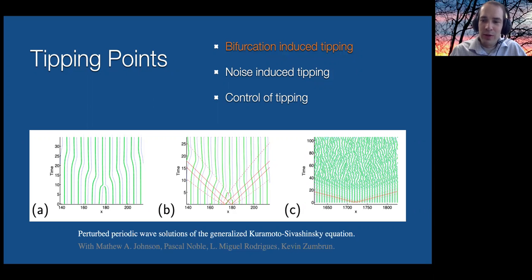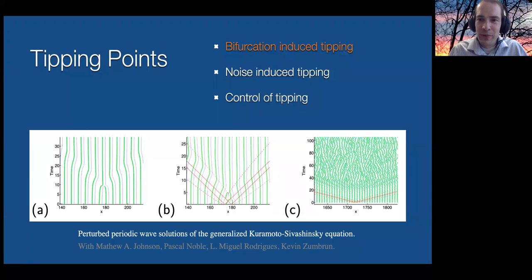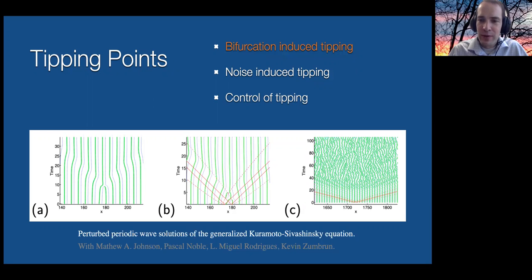If the traveling wave is unstable, that's interesting too, because you can see what happens in the long-term behavior of that perturbation. The point in parameter space that provides the boundary between stability and instability is valuable to know, because it represents a location where physically you'd expect small perturbations to lead to very different behavior. Then there's also noise-induced tipping, where you have an ODE modeling some physical phenomenon and you account for small variations using Brownian motion.